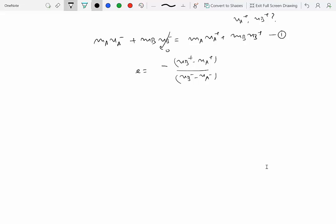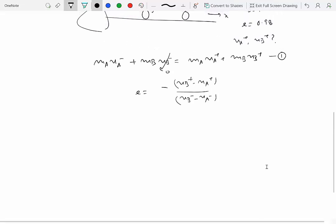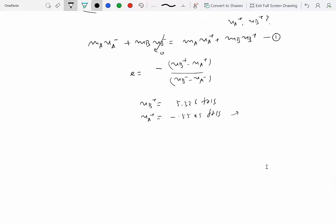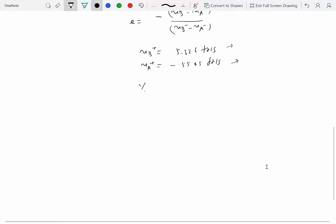Since VB minus is 0, VA plus and VB plus are our unknowns. We need a second equation, so we write the E equation: E equals minus (VB plus minus VA plus) over (VB minus minus VA minus). Substituting all given values, we find VB plus equals 5.326 feet per second and VA plus equals minus 0.5545 feet per second. After impact, A moves in the opposite direction while B moves to the right. The percentage loss in kinetic energy is about 2.185 percent, which is not zero but close to it since E is nearly 1.